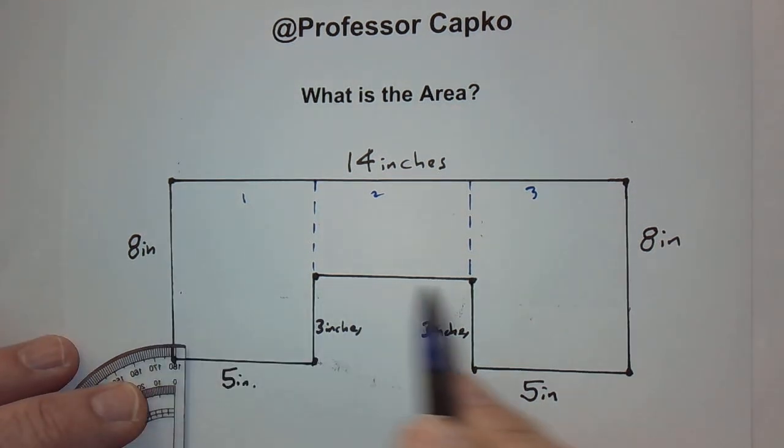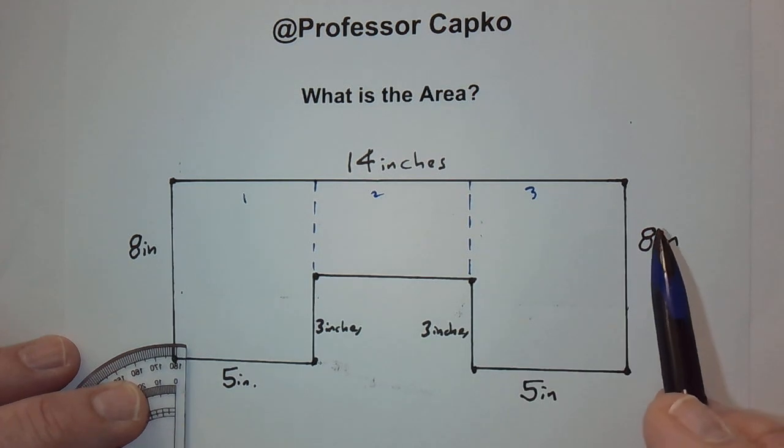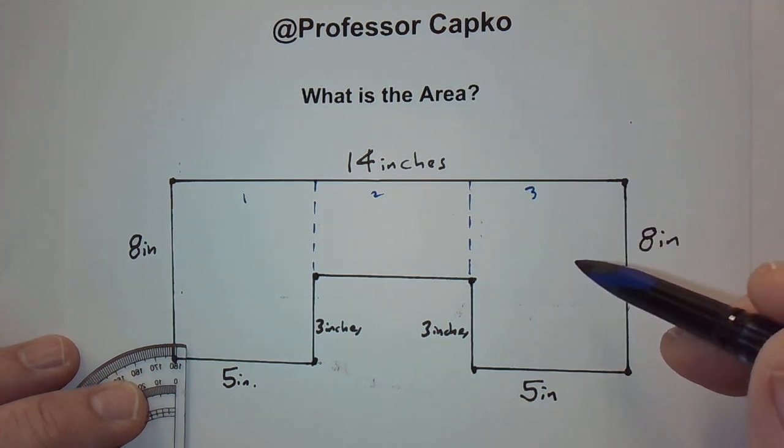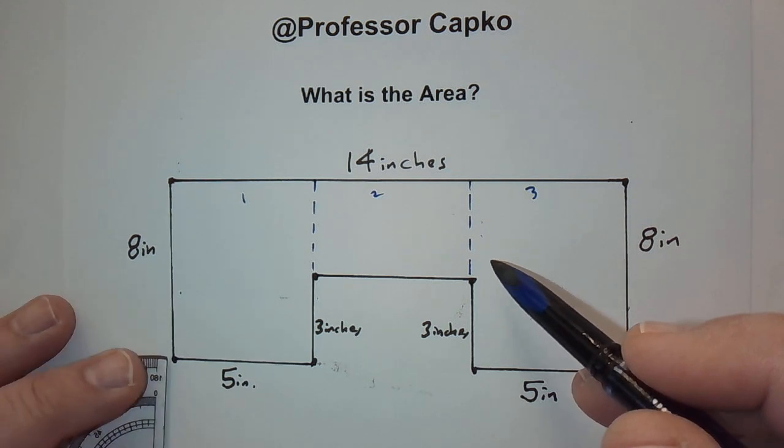I could have broken it up by putting the line this way and made one, two, and a big one this way. That's fine as well. So, either of those ways would work, but this is the way I chose to do it. So, now we've got three different rectangles, and we can now start figuring out the area of them.